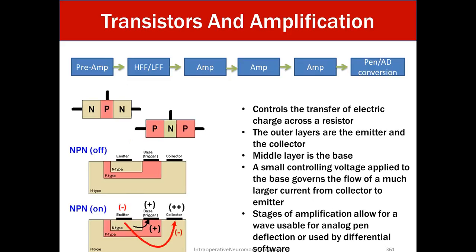Transistors in amplification. So these control the transfer of electric charge across a resistor. The outer layer are emitter and the collector. The middle layer is the base. A small controlling voltage applied to the base governs the flow of much large current from collector to emitter. Stages of amplification allow for a wave usable for analog pen deflection or used by differential software.